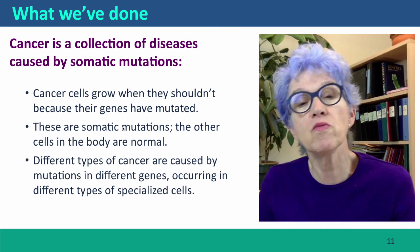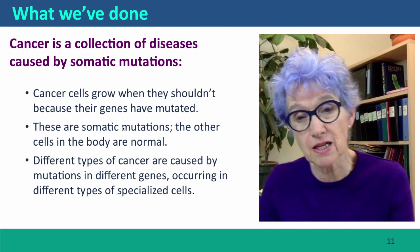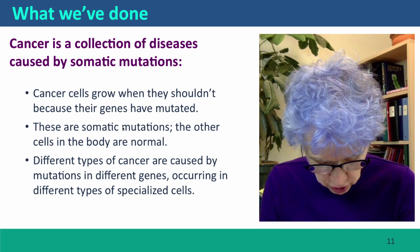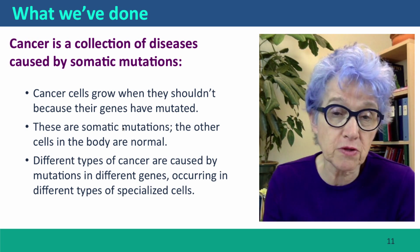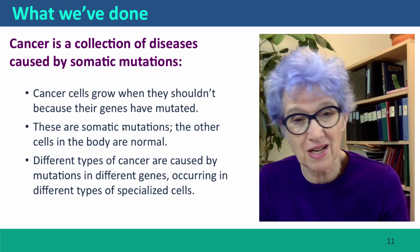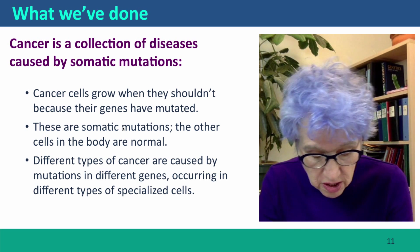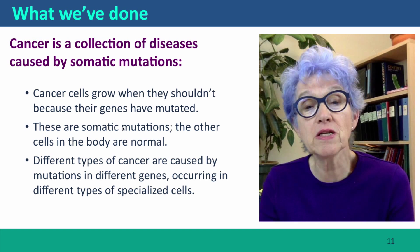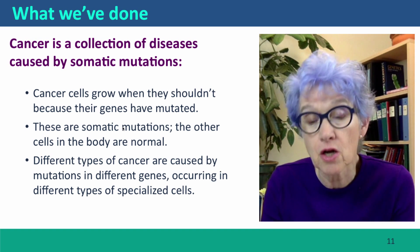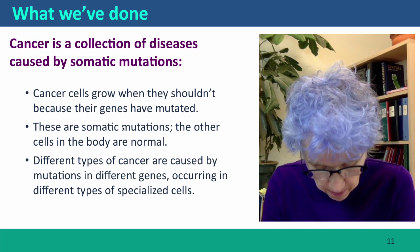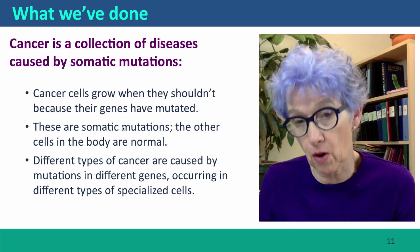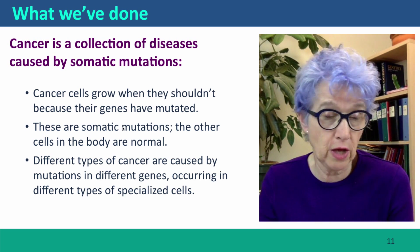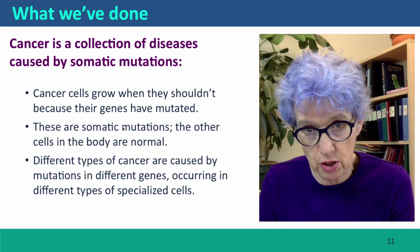So what we've done: we've talked about cancer and the great genetic diversity of cancer. Different types of cancer are caused by mutations in different kinds of cells, causing the cells to grow when they shouldn't. So cancer is fundamentally a genetic disease caused by somatic mutations. The other cells in the body — the cells that aren't part of the tumor — are normal; they have not got the mutations that cause cancer.